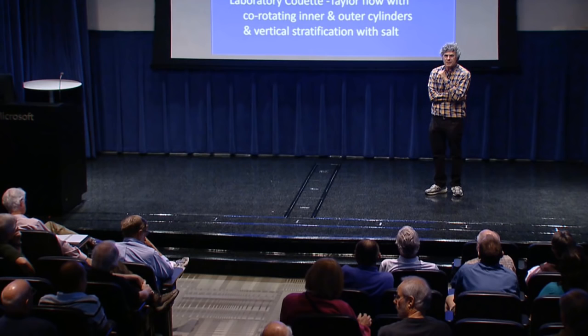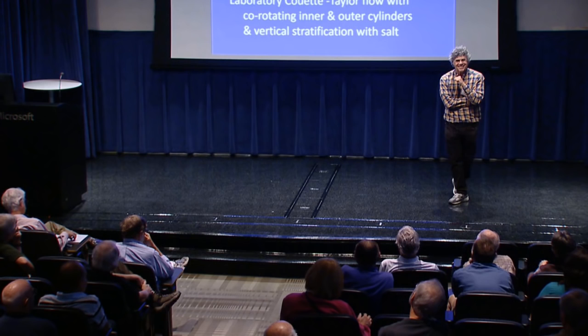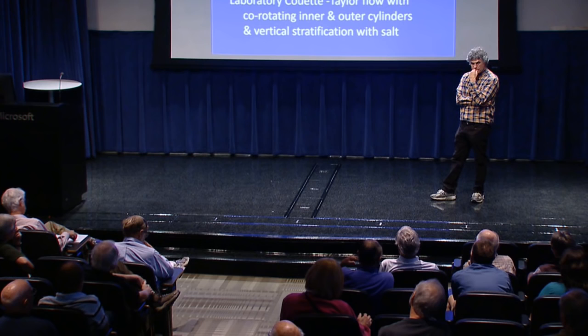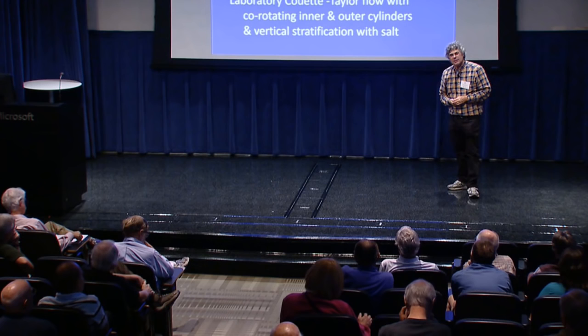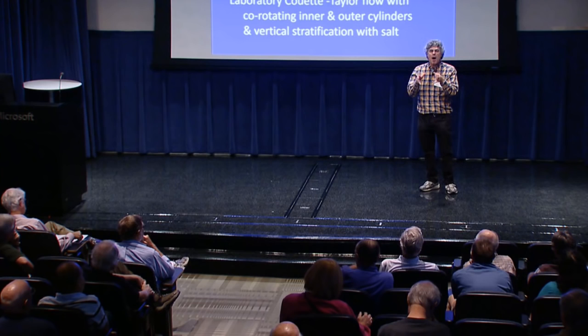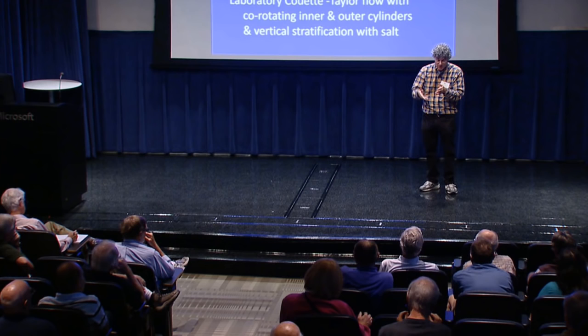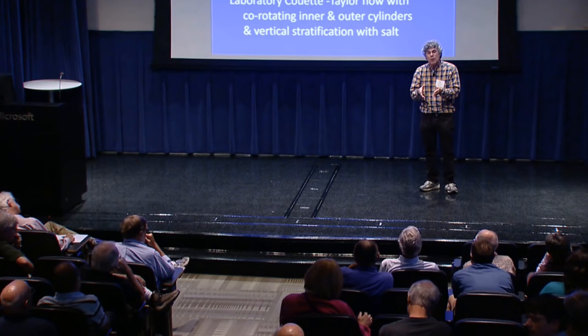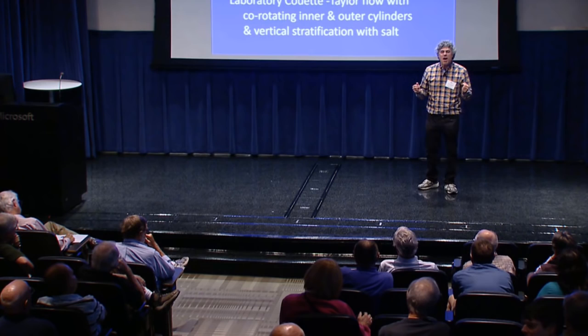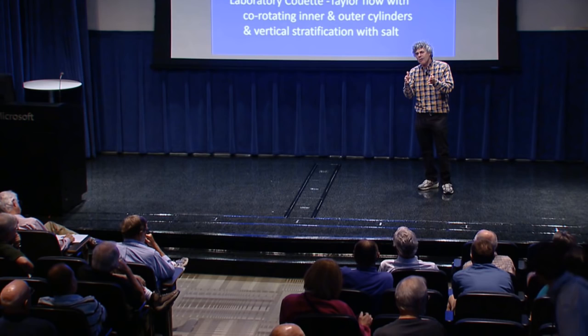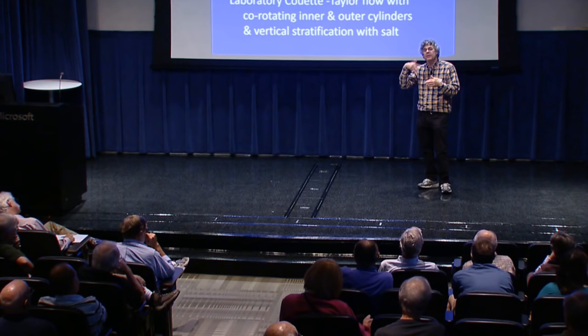Regarding the stratorotational instability (SRI) as a laboratory analog: the problem is that SRI requires one or two boundaries to drive it, and it has been seen in circular Couette flow with two boundaries. But in a Keplerian disk, there's nothing analogous to a solid boundary, so it's not obvious SRI would work in that limit. When we do our zombie vortex experiment in the laboratory, we have to operate in a regime where SRI does not operate, to avoid confusion.